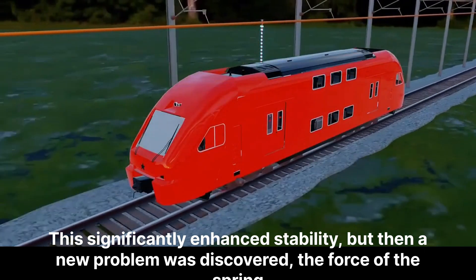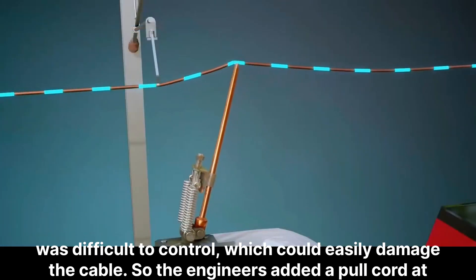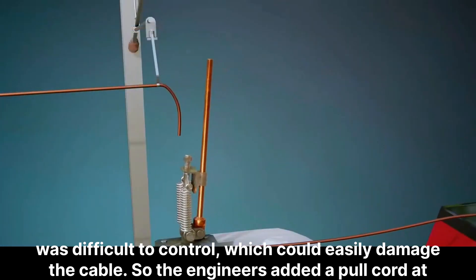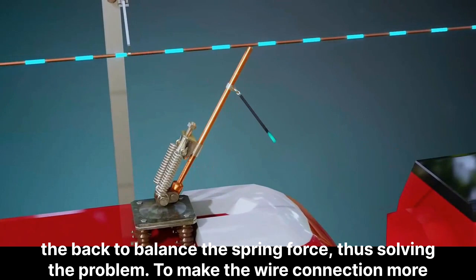But then a new problem was discovered. The force of the spring was difficult to control, which could easily damage the cable. So the engineers added a pull cord at the back to balance the spring force, thus solving the problem.